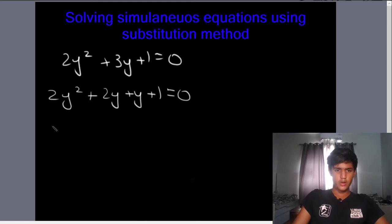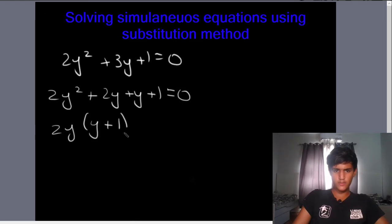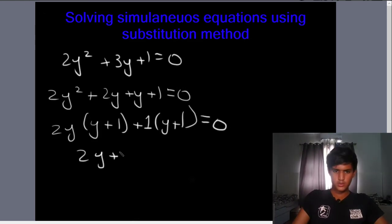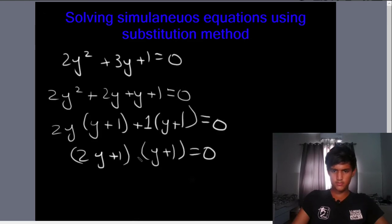We take 2y as a common factor from the first two terms, giving 2y(y + 1), and then take 1 as a common factor from the last two terms, giving 1(y + 1). So we are left with (2y + 1)(y + 1) is equal to 0.